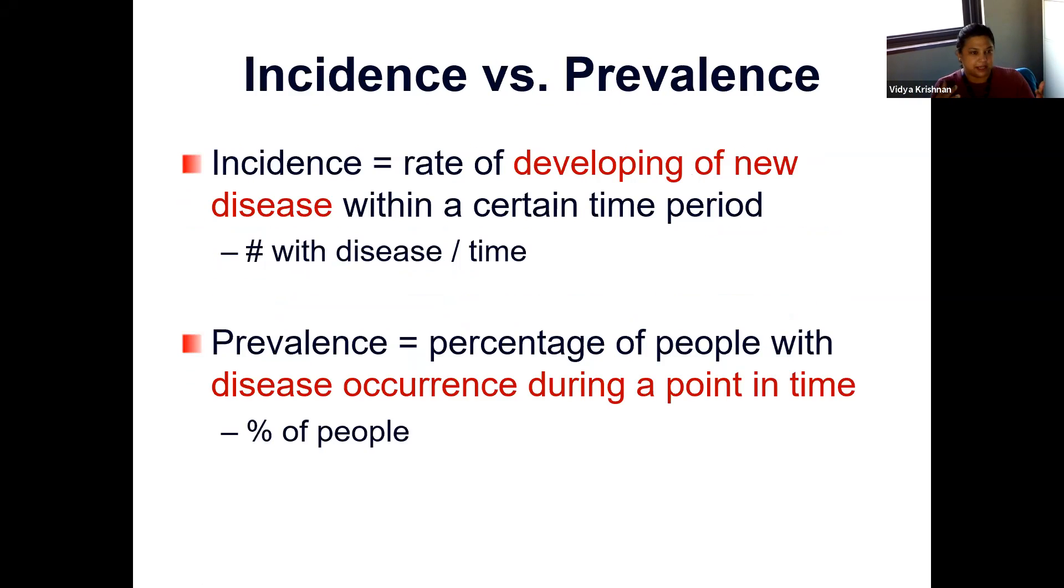So this brings up the concept of incidence versus prevalence. In cross sectional studies, you can determine the prevalence, like the percentage of people with a disease occurring at a single point in time. That's simply a percentage. Whereas incidence is the rate of developing new disease within a certain time period. So it's a number of people who have developed the disease over the time duration.